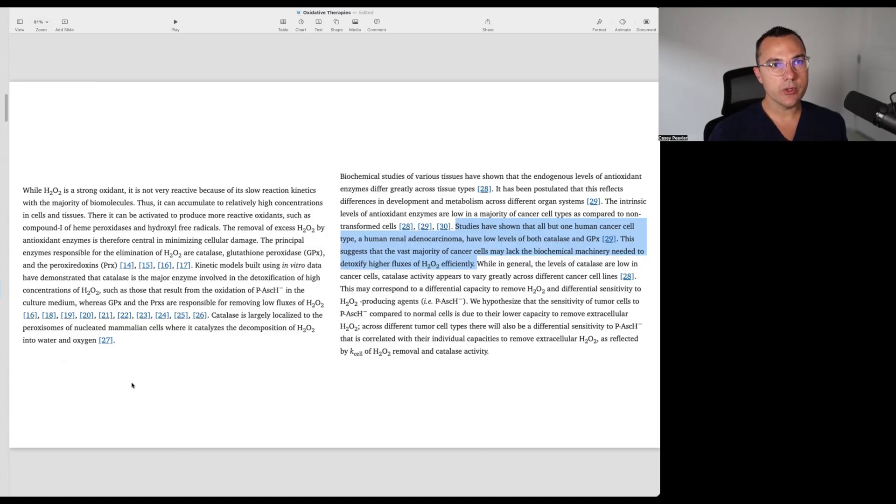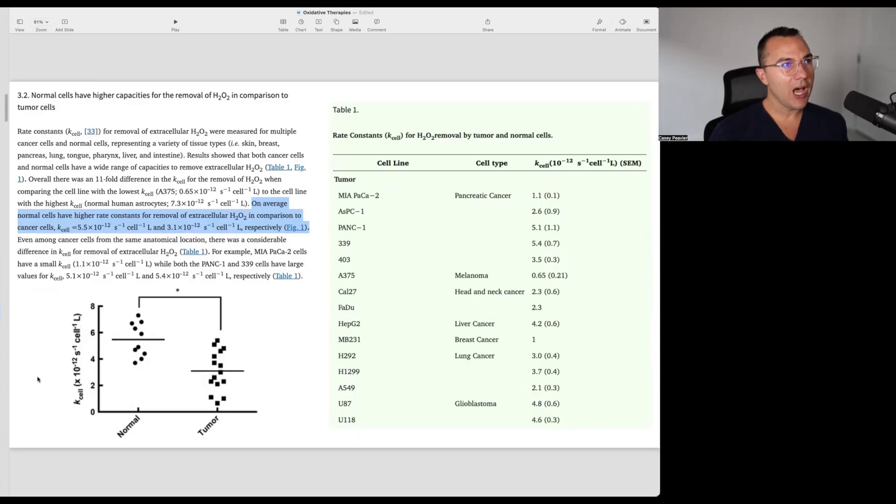It later says, studies have shown that all but one human cancer cell type, human renal adenocarcinoma, have low levels of both catalase and glutathione peroxidase. This suggests that the vast majority of cancer cells may lack the biochemical machinery needed to detoxify higher fluxes of hydrogen peroxide efficiently. And here it says that on average, normal cells have a higher rate constants for removing extracellular hydrogen peroxide in comparison to cancer cells, 5.5 versus 3.1, times 10 to the negative 12 seconds to the negative one, compared to cancer cells by about two. We see here that here is the normal cell's ability to get rid of hydrogen peroxide versus the tumor cell's ability to get rid of the hydrogen peroxide.